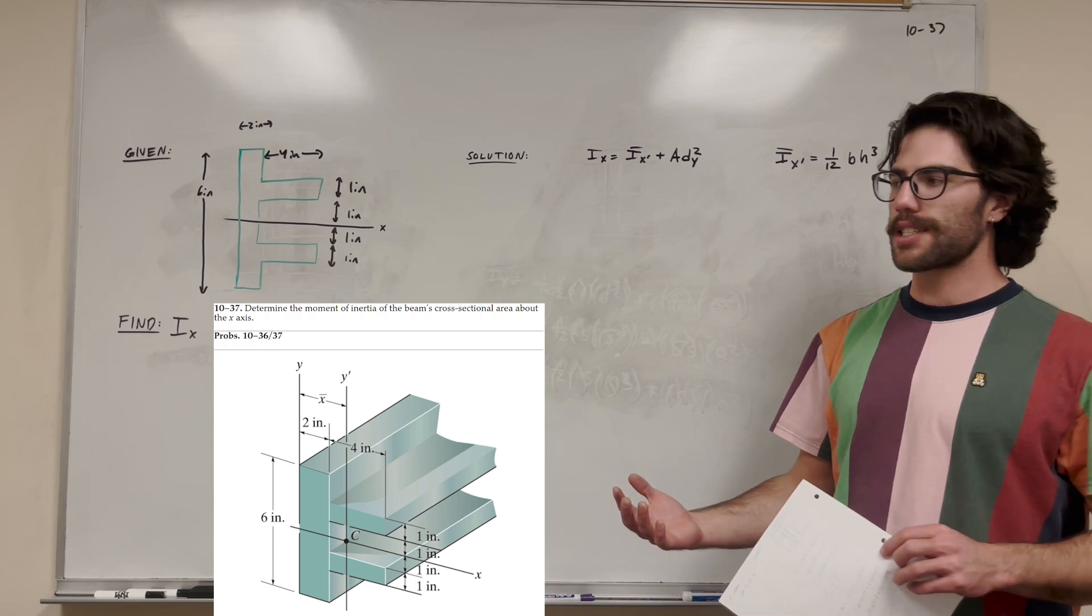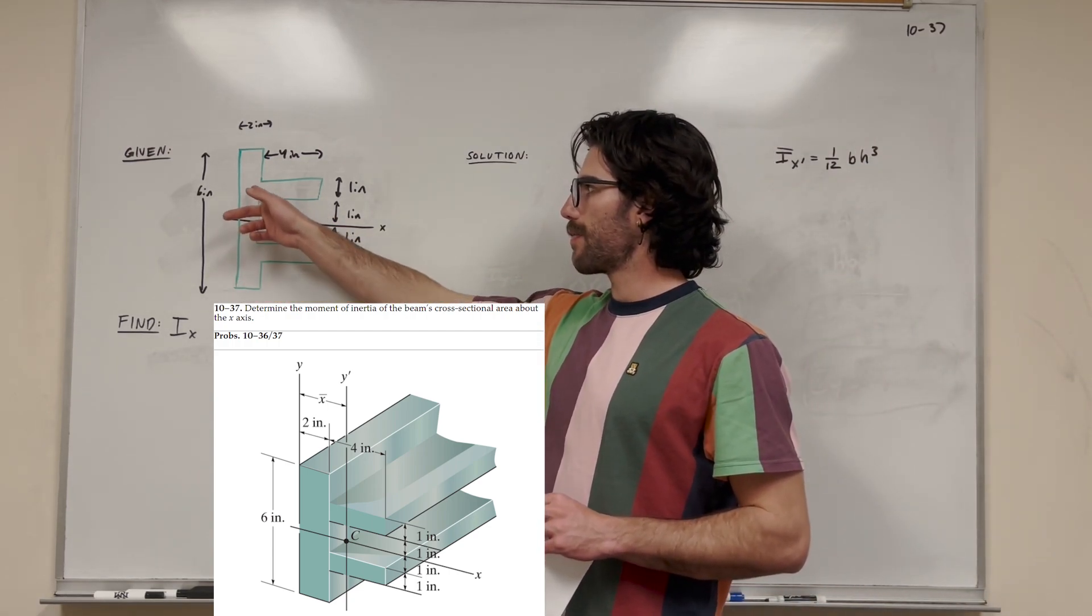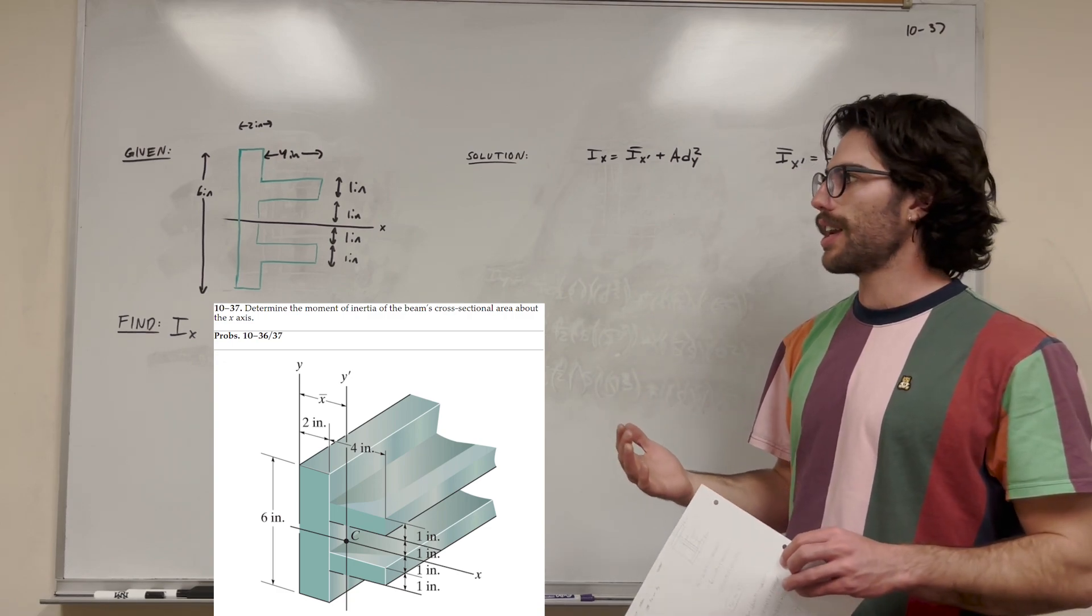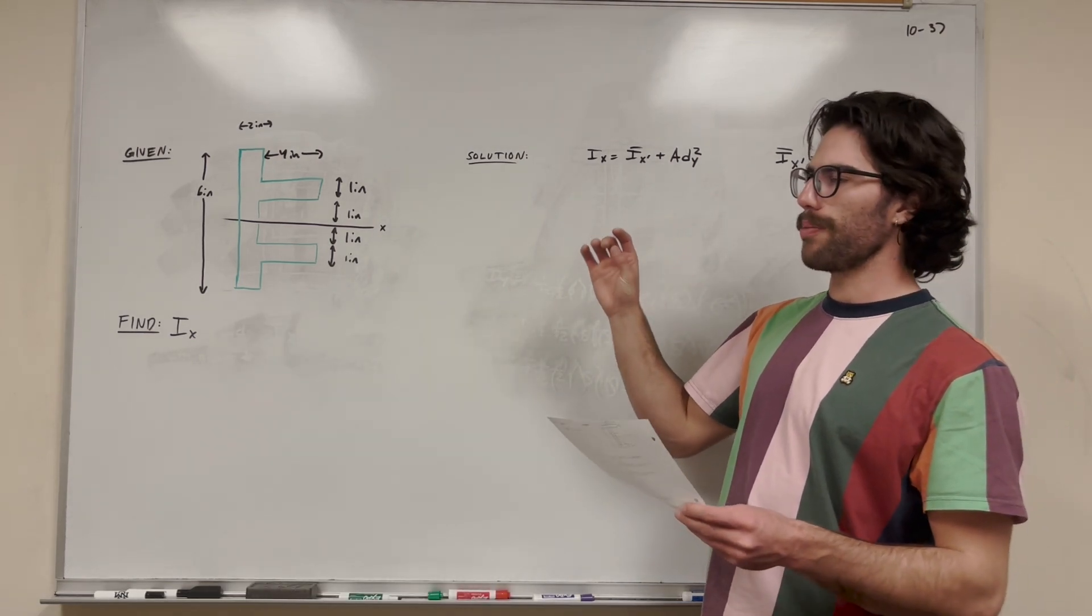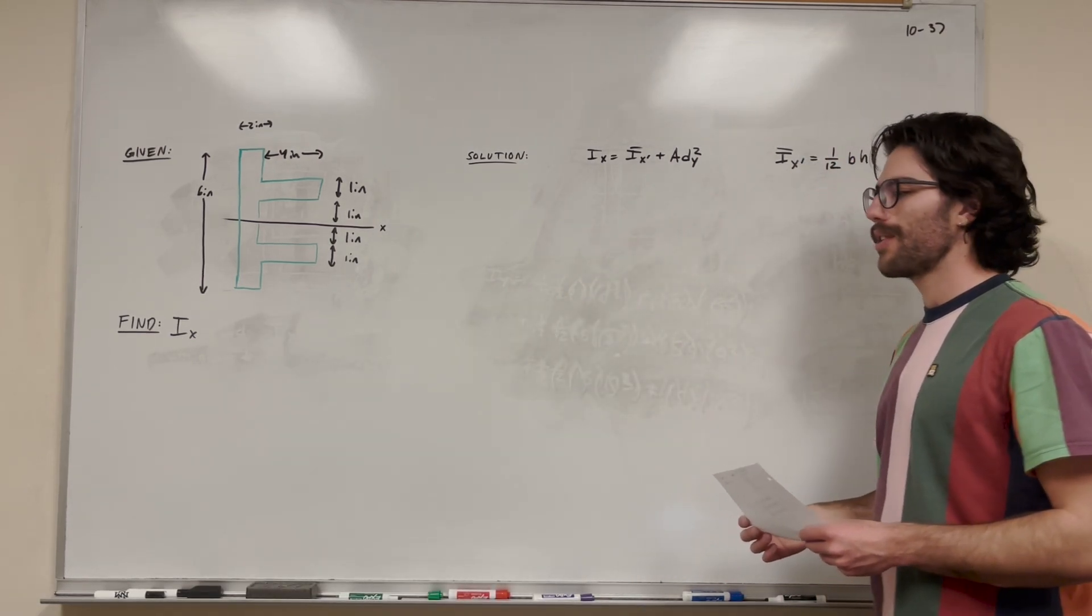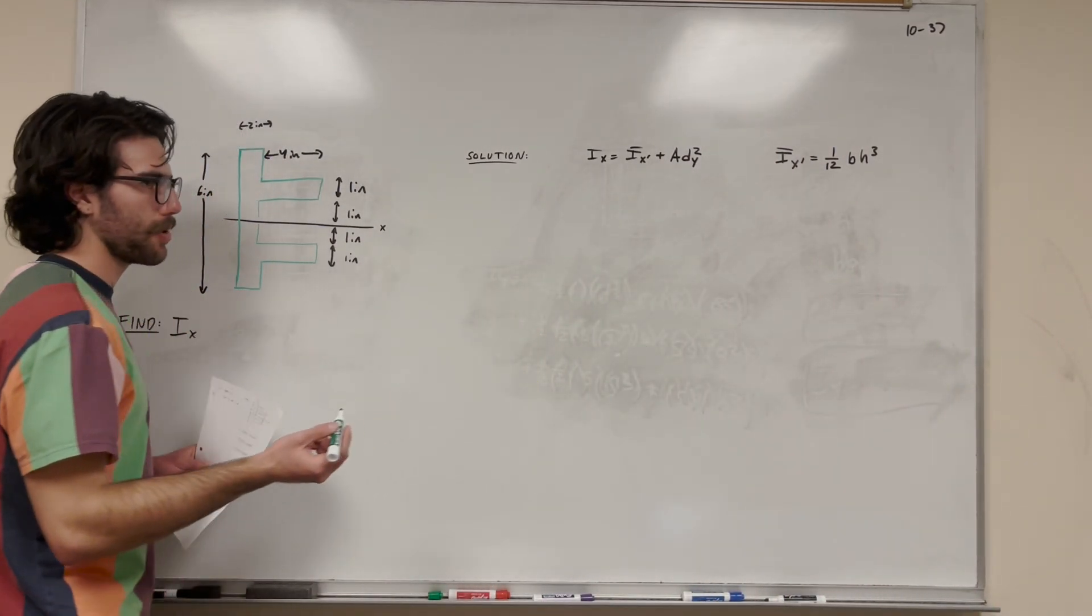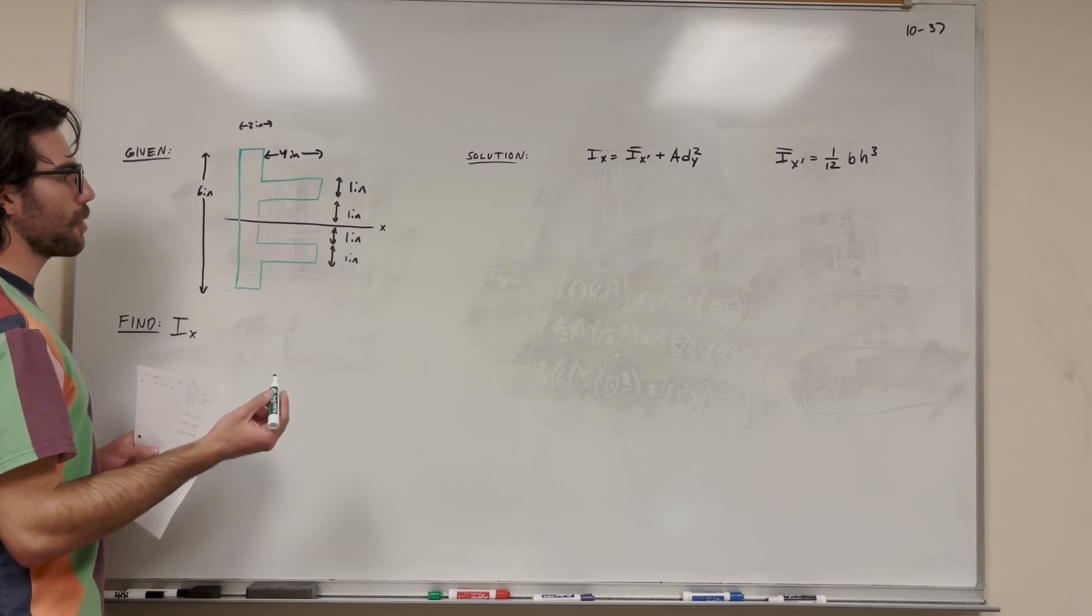We're going to use the parallel axis theorem because looking at the shape, we have not just a normal rectangle, or a square, or a circle or anything. We have like these kind of Lego pieces. So, let's go and figure it out. First of all, when we have the parallel axis theorem, we need to break it up into simple shapes. So, there's a couple ways we could break this up.